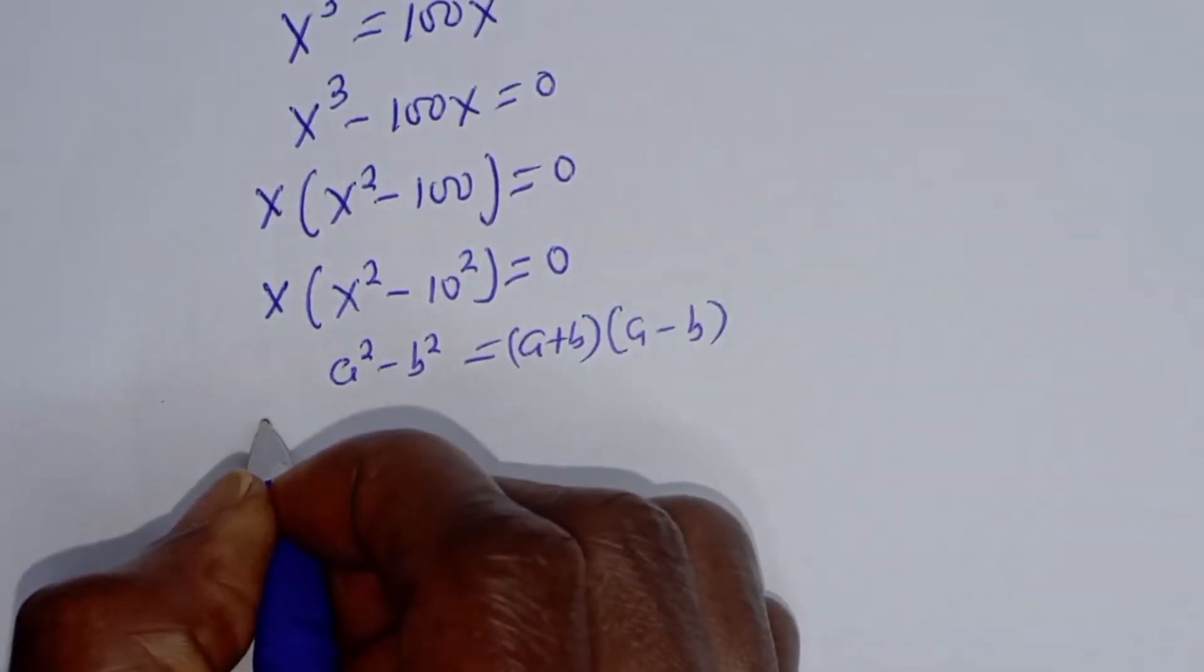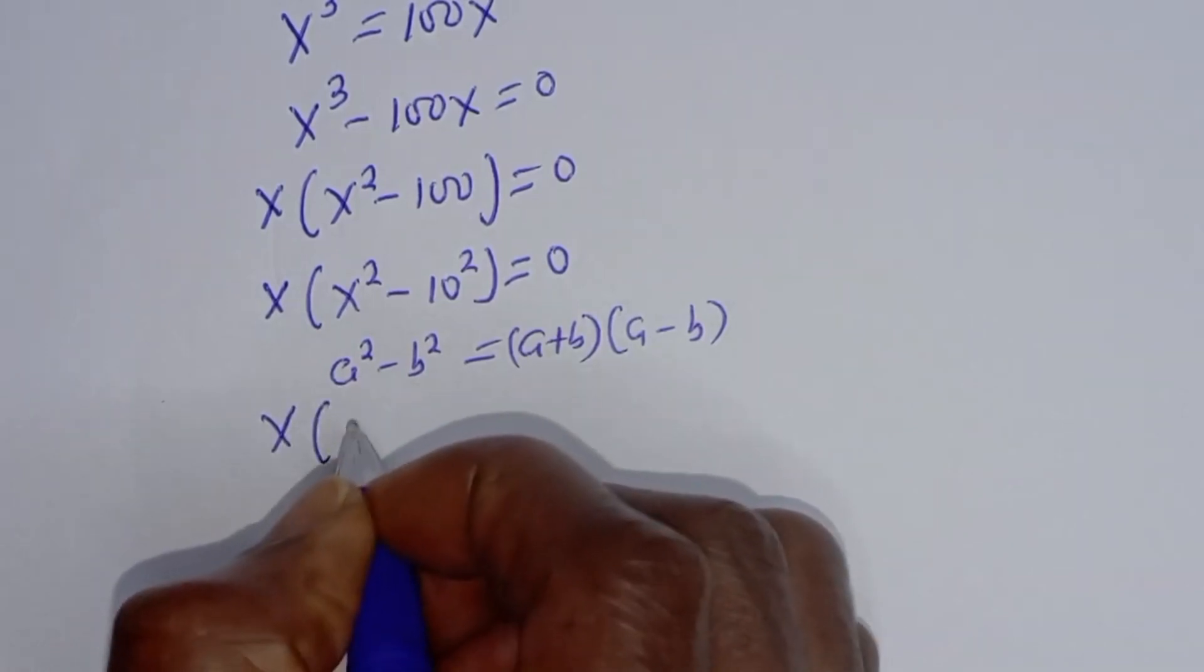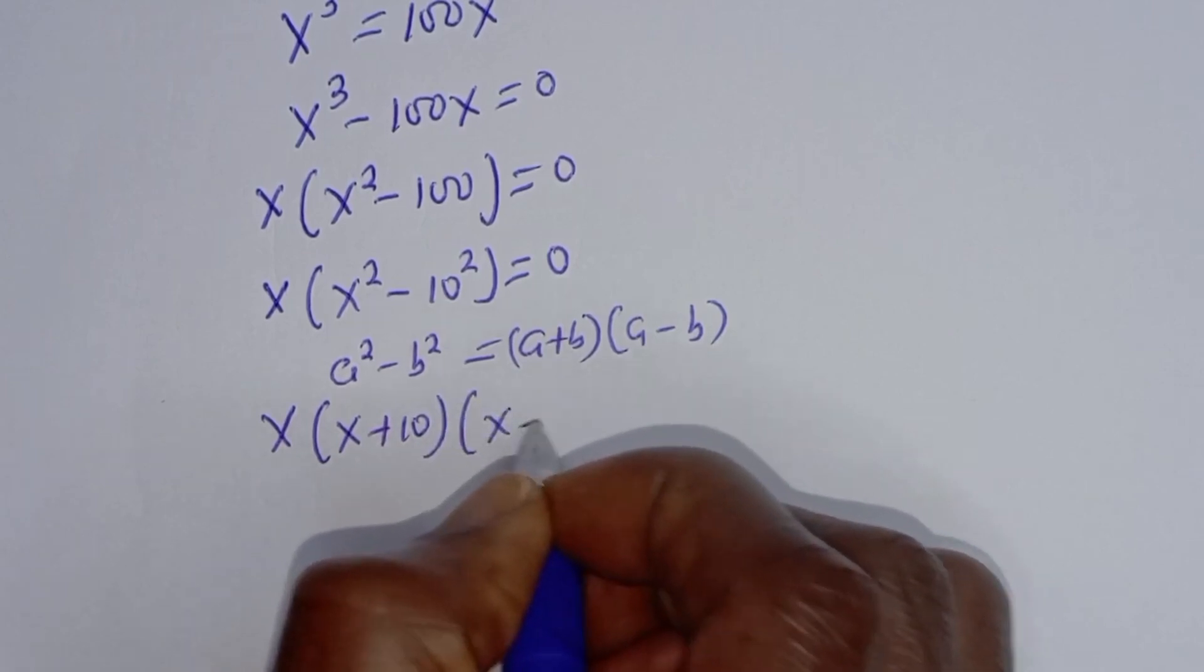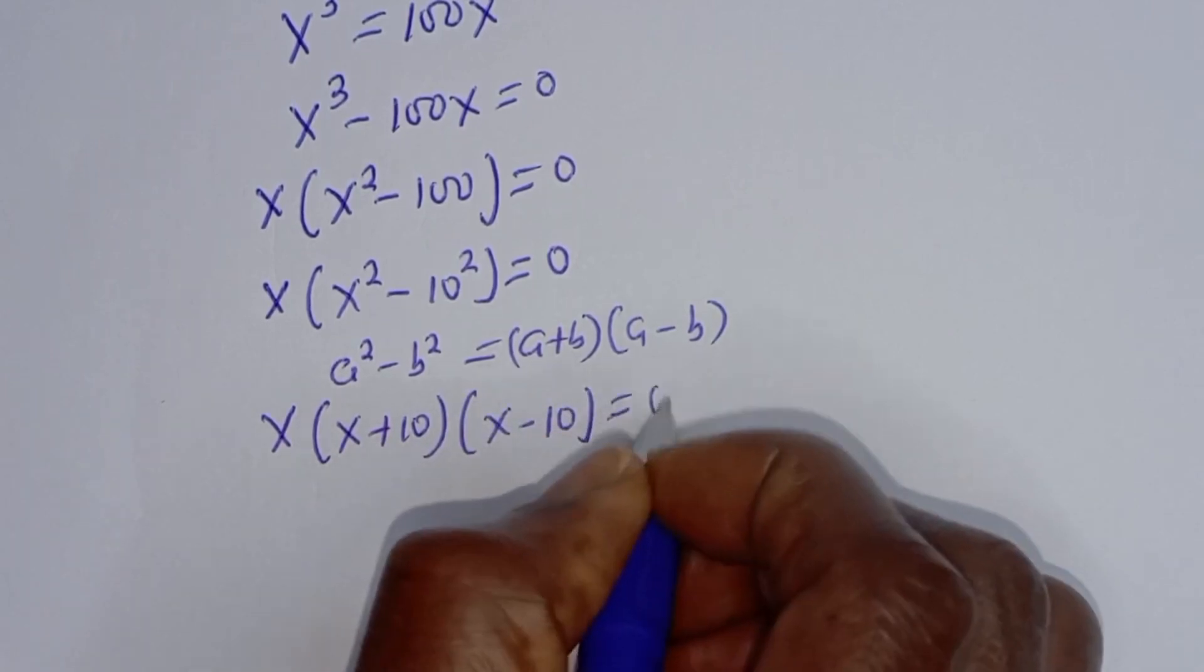Now let's substitute. x bracket x plus 10 bracket x minus 10 equals 0.